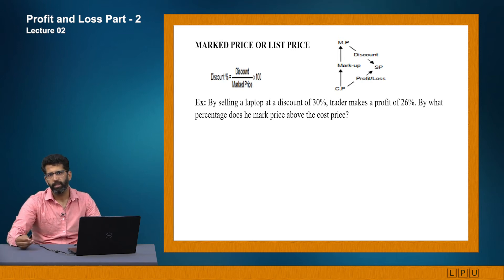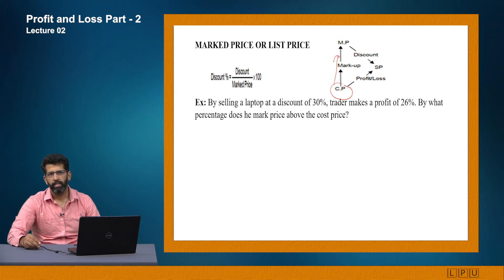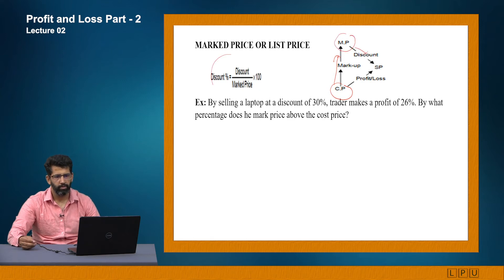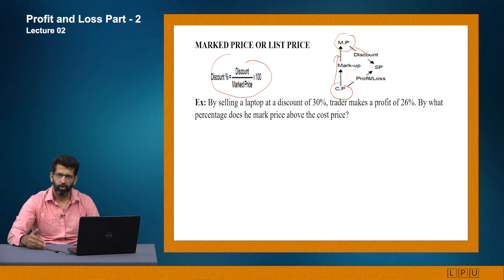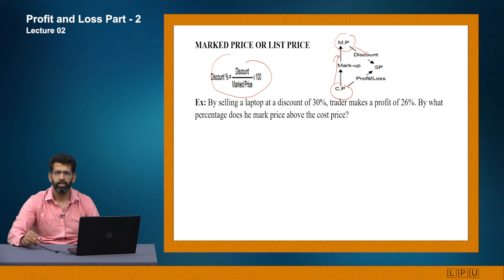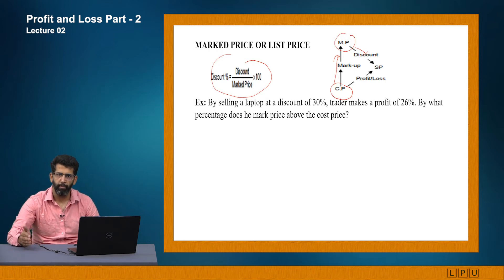That will not always be the final price because sometimes a merchant will offer a discount on the mark price. The formula is: discount percentage = discount / mark price × 100. Just like profit and loss is always calculated on the basis of cost price, your discount is always calculated on your mark price — never on cost price or selling price. Once discount is given, we arrive at the selling price.